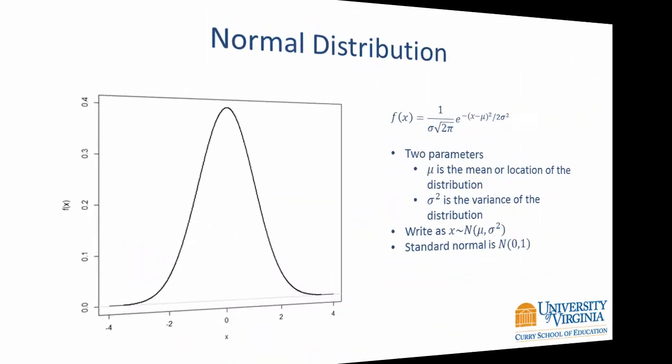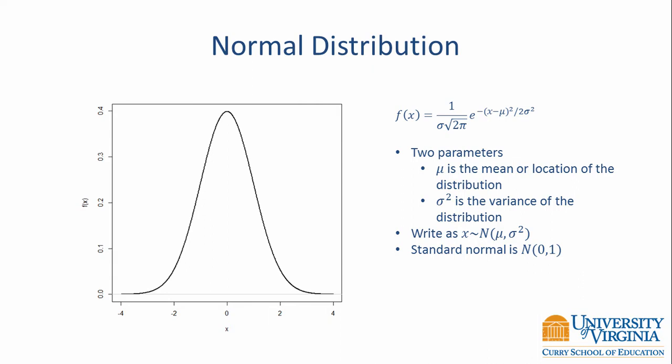The normal distribution is defined by a function with two parameters. The mean μ represents the location of the distribution and the variance σ² represents the spread or the variability of the distribution. We often write a normal distribution as N and within parentheses the mean and the variance. For instance, the standard normal distribution is a normal distribution that has a mean of 0 and a variance of 1, and we would write it as N(0,1).